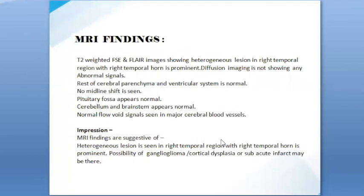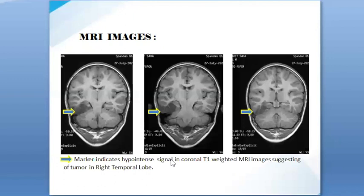MRI findings: T2-weighted FSE and FLAIR images showing a heterogeneous lesion in the right temporal region with right temporal horn prominence. Diffusion imaging shows no abnormal signals. The rest of the cerebral parenchyma and ventricular system is normal. No midline shift is seen. Pituitary fossa appears normal. Cerebellum and brainstem appear normal. Normal flow void signals are seen in major cerebral blood vessels. Impression: Heterogeneous lesion in the right temporal region — possibility of ganglioglioma, cortical dysplasia, or subacute infarct.